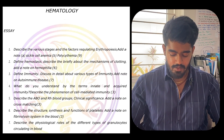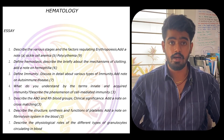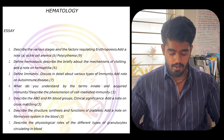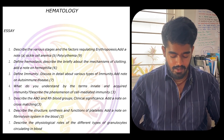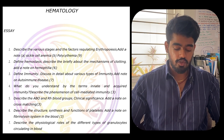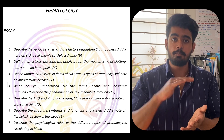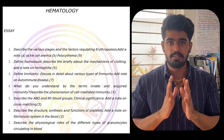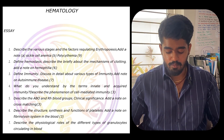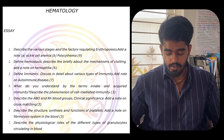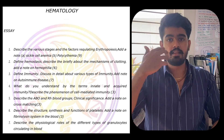Coming to hematology, erythropoiesis is very important. The important essay questions are: erythropoiesis, haemophilia, immunity, immune mechanisms, blood groups, platelets, and granulocytes. These will be the most important essay questions. Most short notes will be covered in the essay, but some important short notes are: anticoagulants, platelets, erythropoiesis, plasma proteins, haemophilia, erythropoietin, and T-lymphocytes.